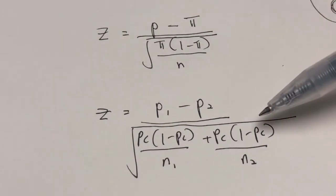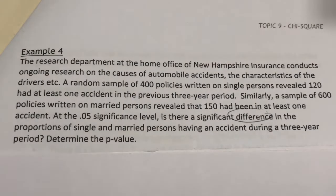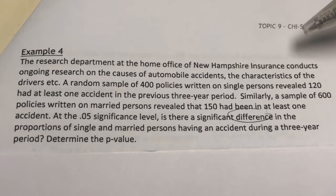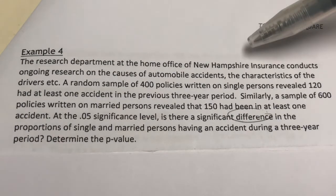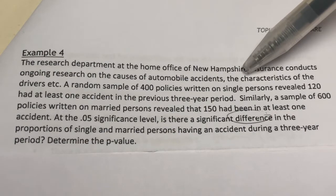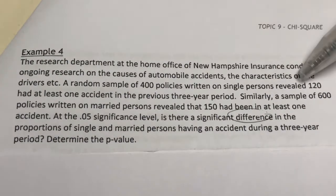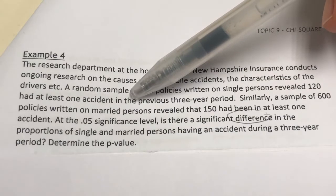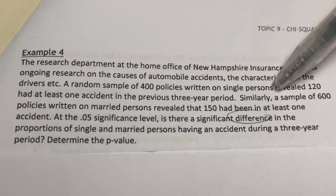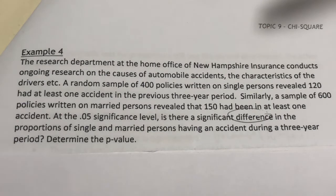Let's try this example. The research department at the Home Office of New Hampshire Insurance conducts ongoing research on the causes of automobile accidents and the characteristics of the drivers. A random sample of 400 policies written on single persons revealed that 120 of them had at least one accident in the previous three-year period. Similarly, a sample of 600 policies written on married persons revealed that 150 of them had been in at least one accident. At the 5% significance level, is there a significant difference in the proportions of single and married persons having an accident during a three-year period? Determine the p-value.